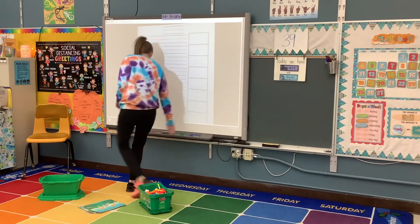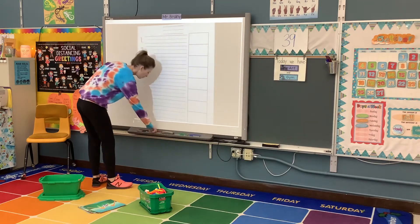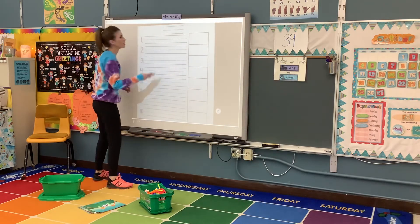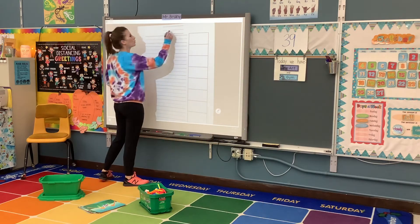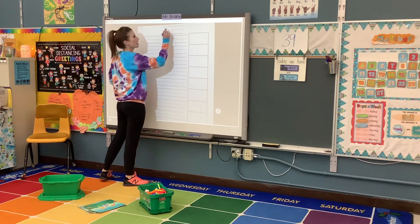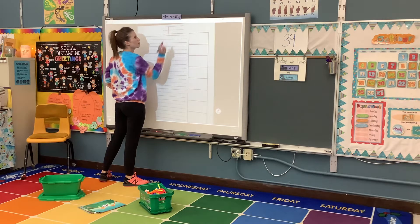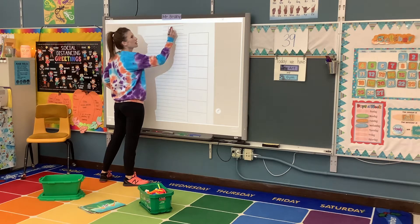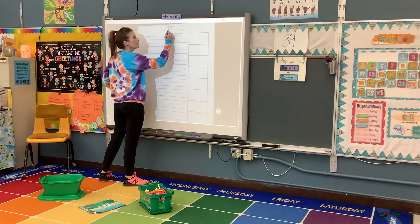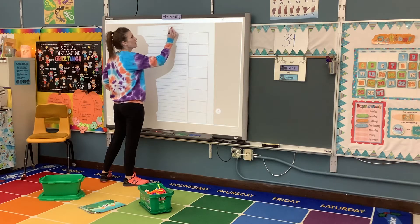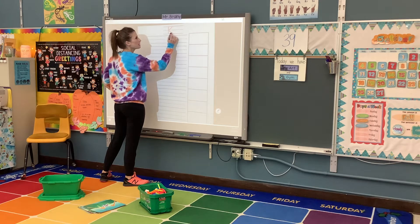We are going to write our capital letter K at the top and our lowercase letter K. Straight line down, I pick up, I come out, and I diagonal in, I diagonal out, and I diagonal into the belt line.